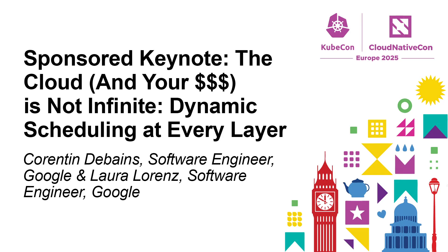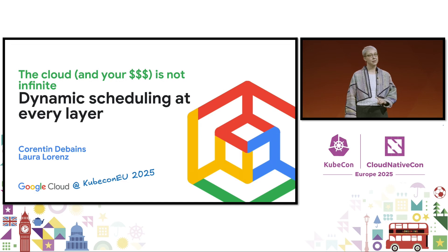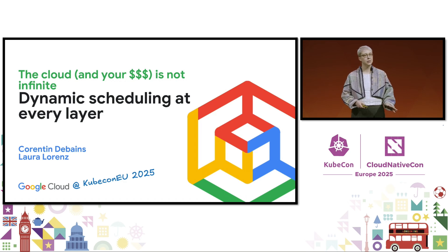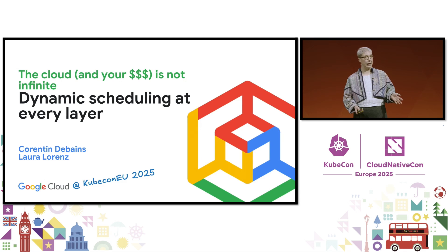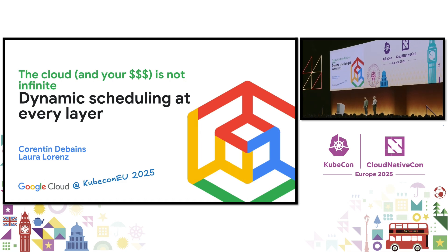Ten years ago, Kubernetes revolutionized our way of running workloads. Now it's reinventing itself again to adapt to new challenges. Static provisioning was an achievable luxury for traditional workloads, but it's grossly unaffordable for emerging AI and ML needs. To optimize spending and navigate global resource contention, more sophisticated, deeply dynamic scheduling is necessary.